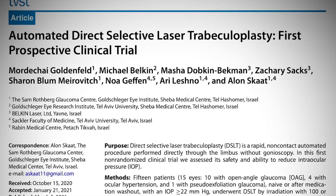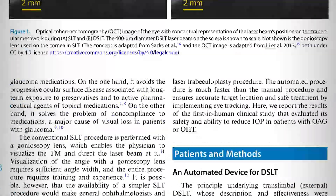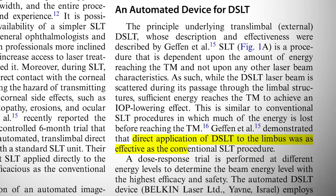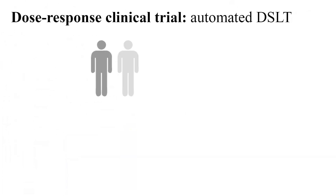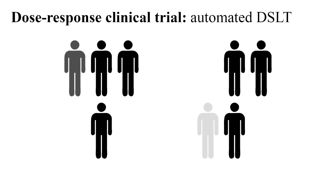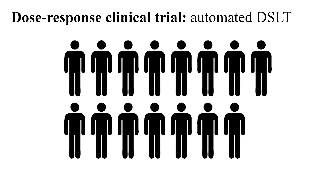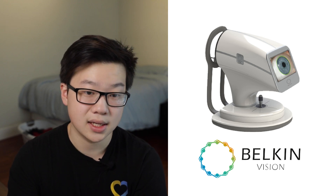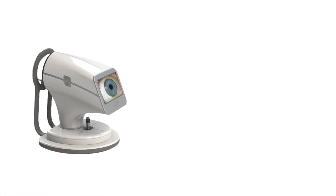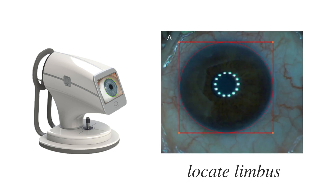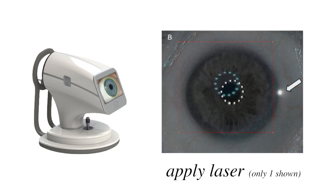This paper from the Rothberg Glaucoma Center published in March indicates that DSLT is just as effective as SLT, and presents a clinical trial in which an automated form of DSLT is used to treat 15 patients with primary open-angle glaucoma. Investigators used the device produced by Belkin, an eye care startup, in order to automate DSLT. The device locates the target area — the limbus — automatically with image processing, and then fires 130 lasers simultaneously to treat the trabecular meshwork.